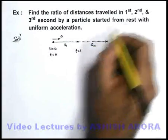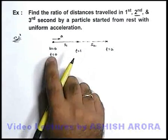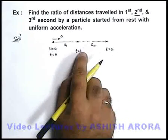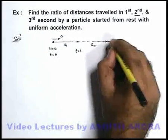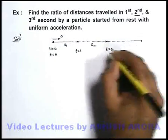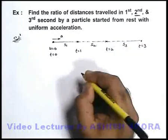Then s2 is the distance travelled by the particle in second second of the motion, because first second is from zero to one, second second of motion is from t=1 to 2. Similarly for third second of motion we can take it from t=2 to t=3. Say if this distance is s3.